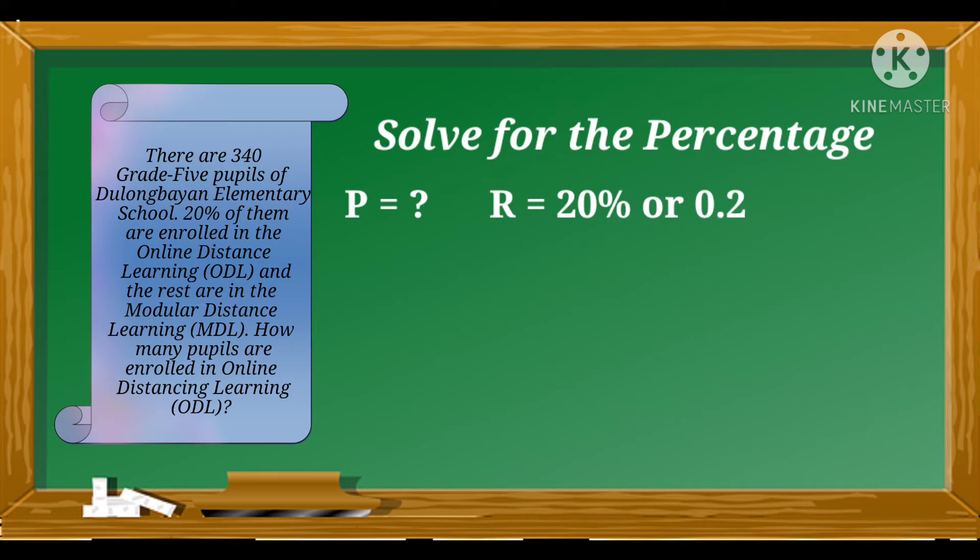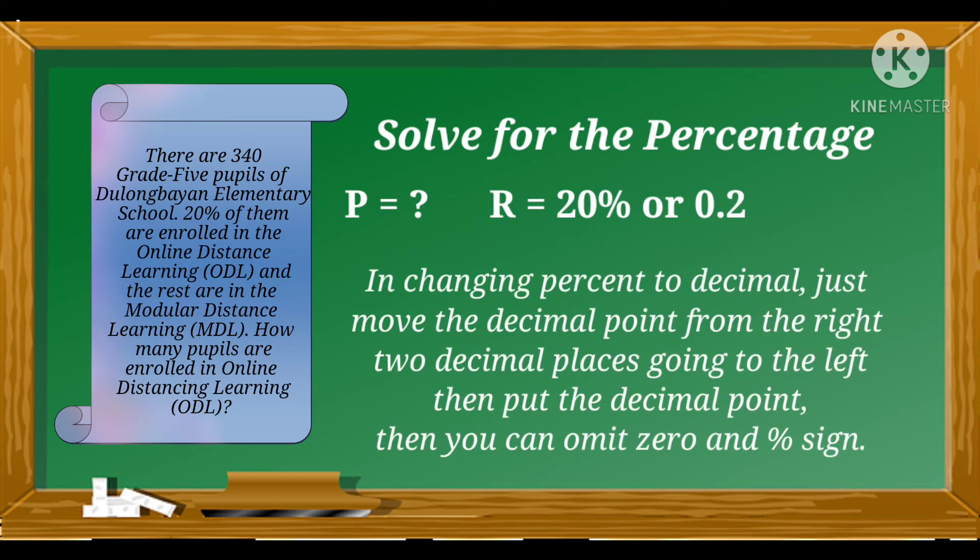Always remember that you should change percent to decimal. How to change percent to decimal? In changing percent to decimal, just move the decimal point from the right two decimal places going to the left. Then, put the decimal point. Then, you can omit zero and the percent sign. So, 20% is equal to 0.2.